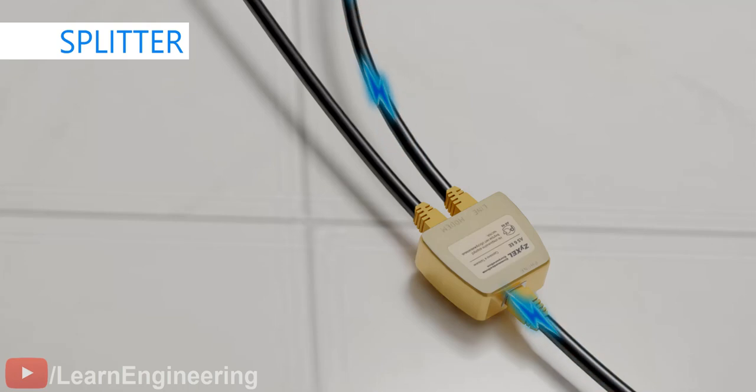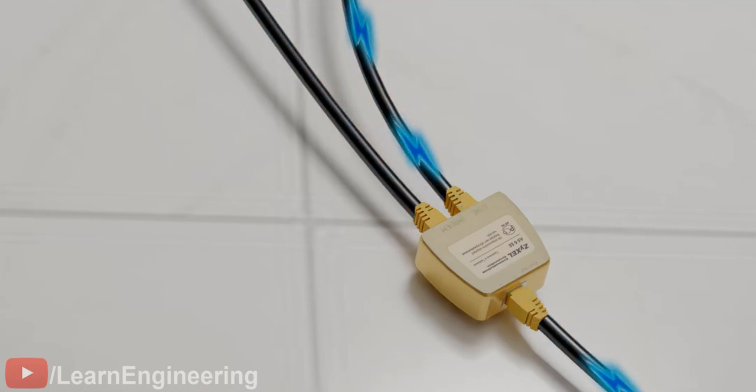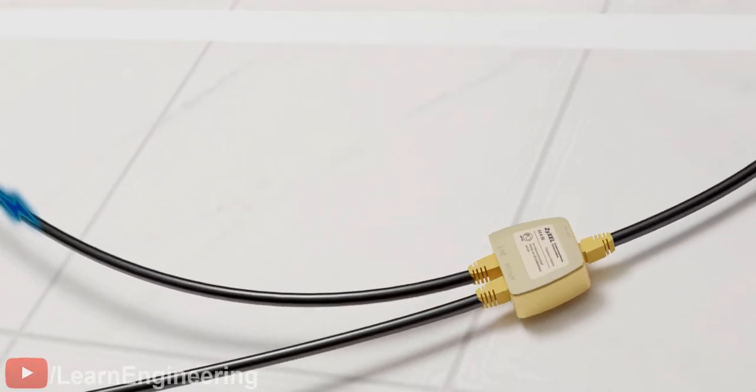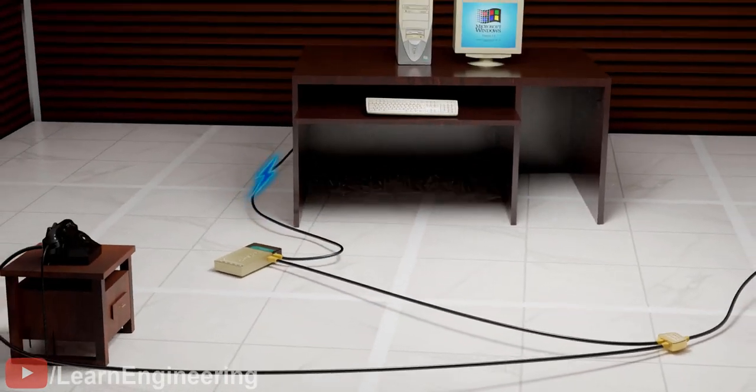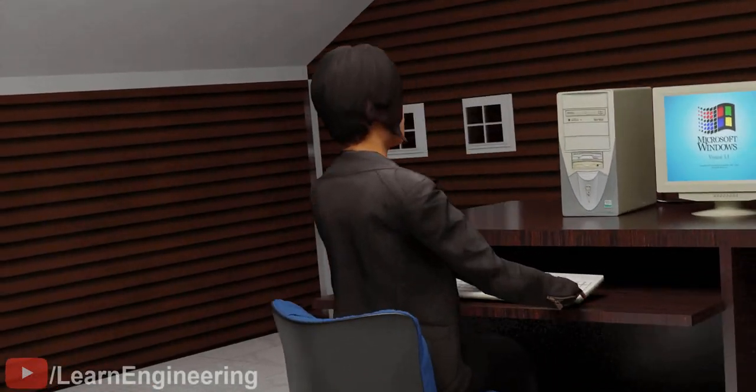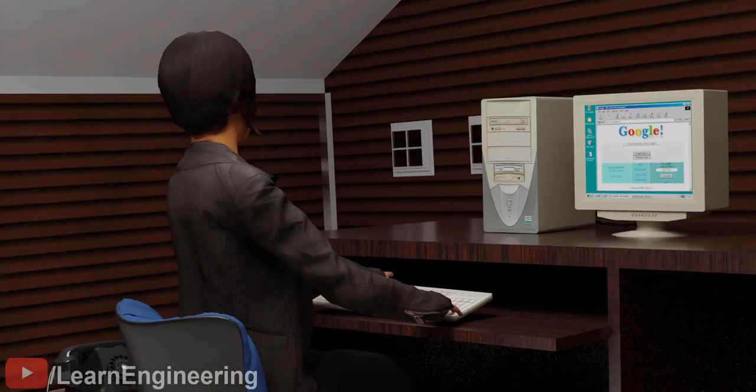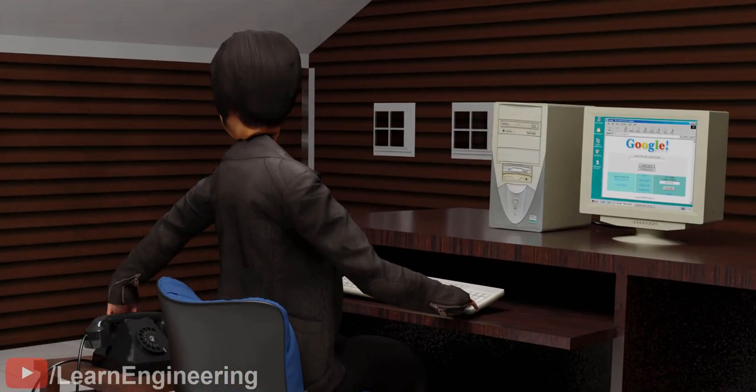A splitter divided the internet signals from the telephone signals. It is impossible to mix different electrical signals together and then separate them out. Either telephone or the internet signal was sent at a time. So with this technology, whenever you used the telephone, your internet connection was lost.